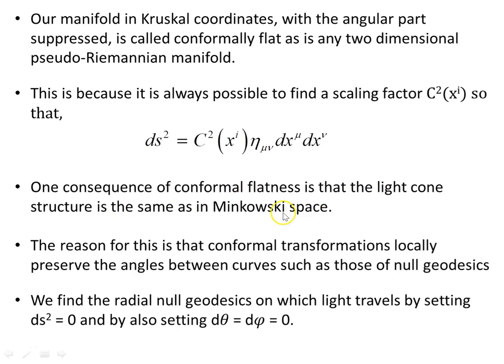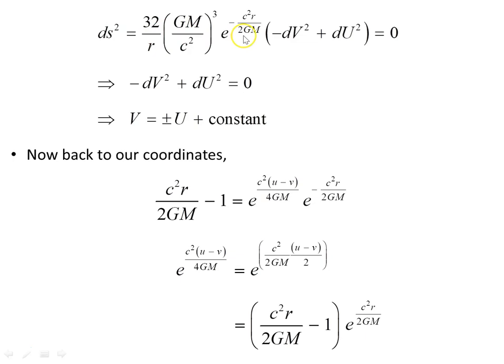One consequence of conformal flatness is that the light cone structure is the same as in Minkowski space — light travels on null geodesics and the angle between them is preserved. Radial null geodesics are found by setting ds² = 0 and the angular differentials to zero, giving us the condition for radial null light curves in the Schwarzschild spacetime mapped to Kruskal coordinates.